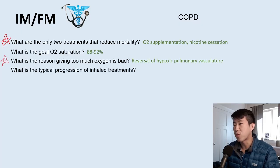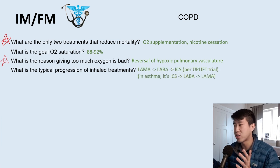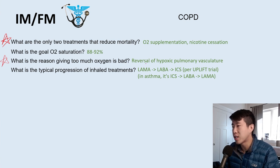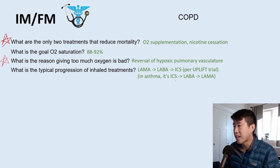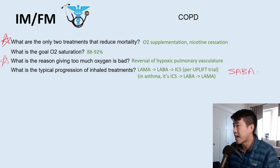The typical progression of inhaled treatments for COPD: start with a long-acting muscarinic antagonist like tiotropium, then add a long-acting beta agonist like salmeterol, then finally inhaled corticosteroids. Interestingly, for asthma we do basically the opposite — start with an inhaled corticosteroid, then LABA, then LAMA. All COPD patients should have a short-acting beta agonist like albuterol ordered for PRN use when they're having wheezing or a flare.